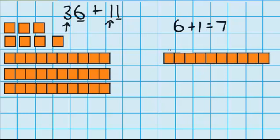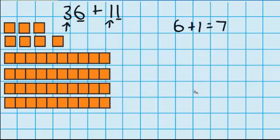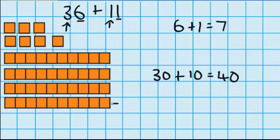Let's just check that using the materials. So I'm going to move this 10 over to the other tens. We can record that like this: we had 3 tens or 30 plus the extra 10 equals 40. And we could double-check by counting up in 10's: 10, 20, 30, 40.